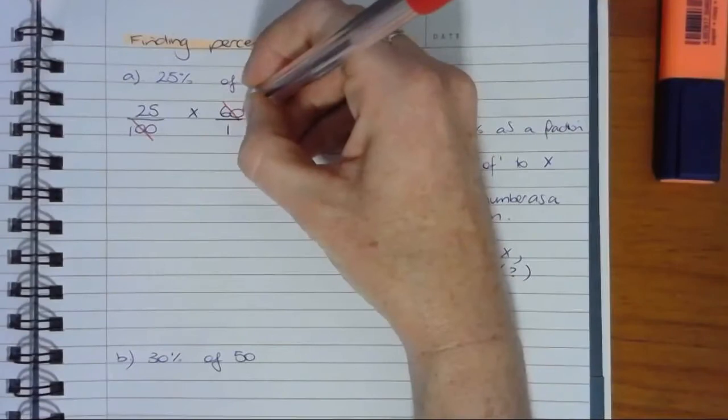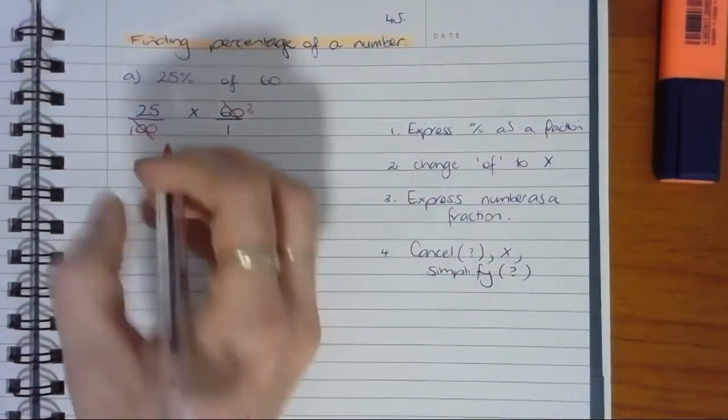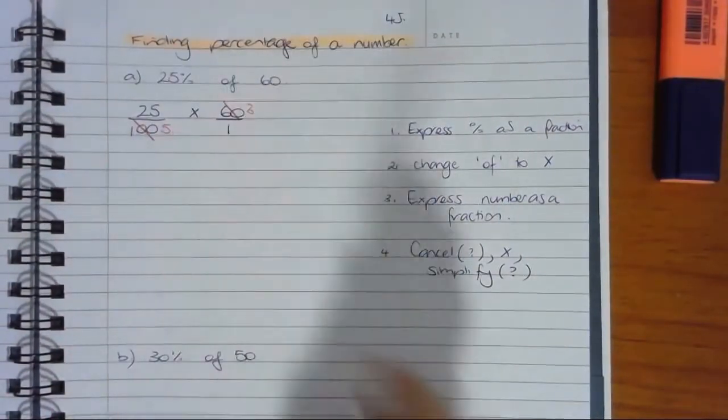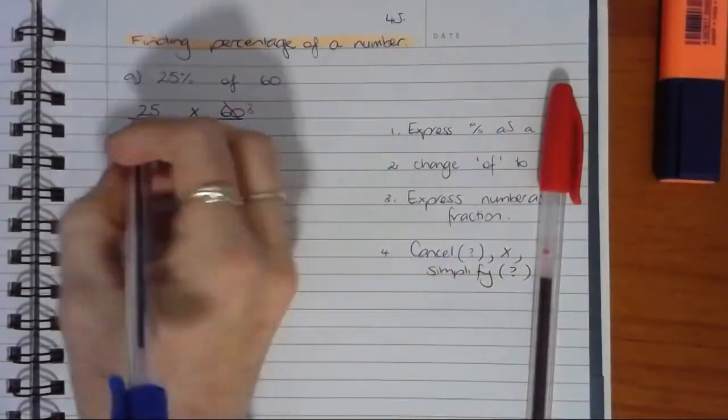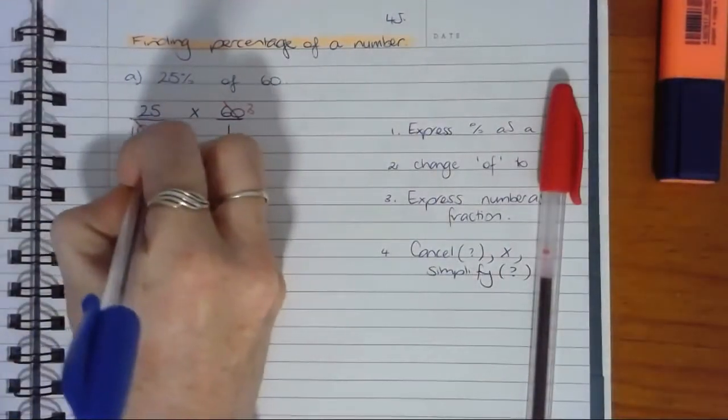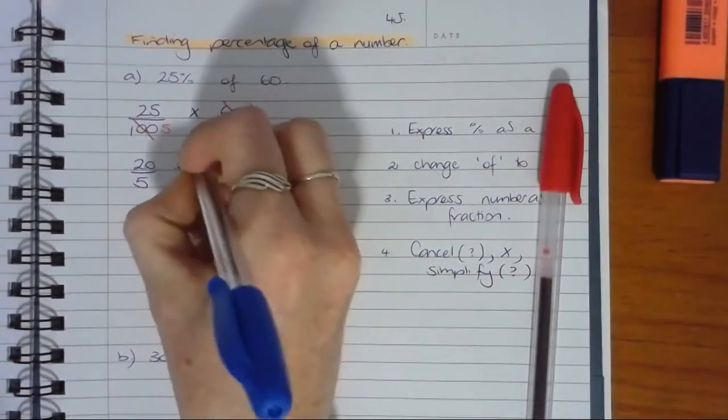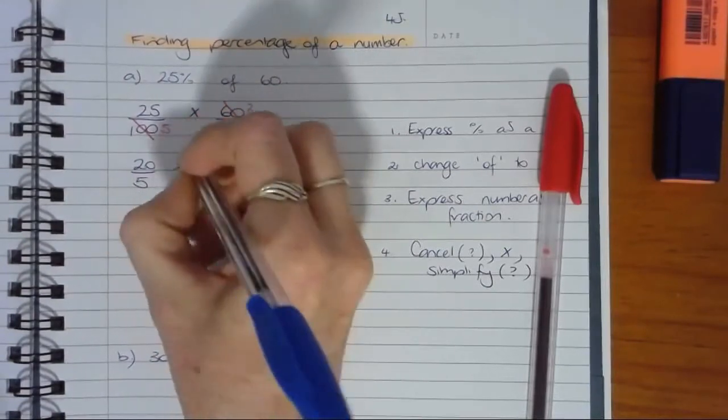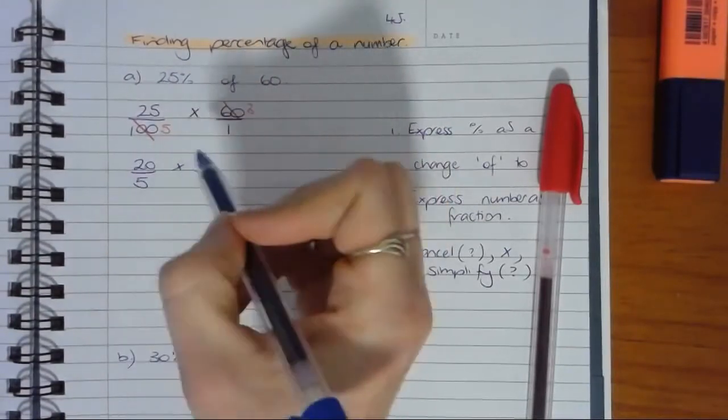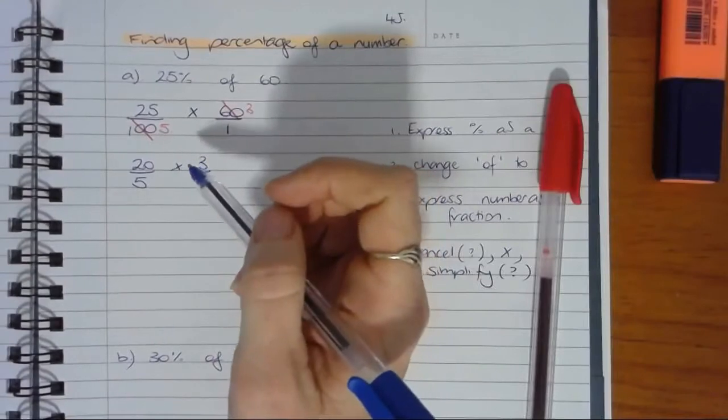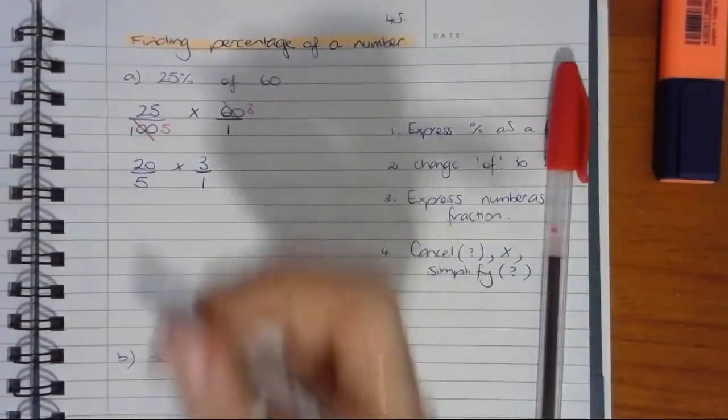60 divided by 20 is 3, 100 divided by 20 is 5. At this point I'm going to rewrite my fraction, because sometimes I have a nasty habit of rewriting the wrong numbers if I try to do too much working. So don't be afraid to do that. Now see, look, I've done it already.